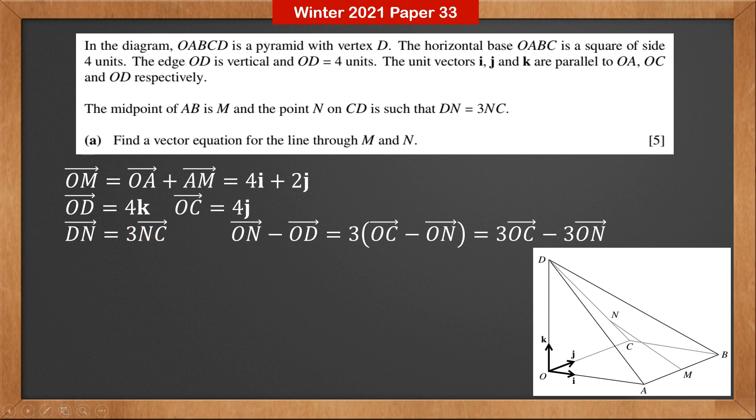DN is ON minus OD. NC is OC minus ON, which equals 3 times OC minus 3 times ON. So ON is 3 times OC plus OD over 4. OC we know is 4J. OD is 4K. We get ON is 3J plus K.